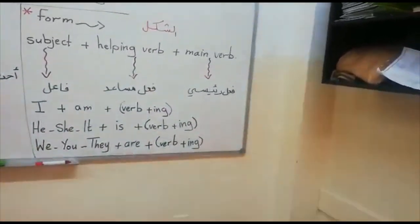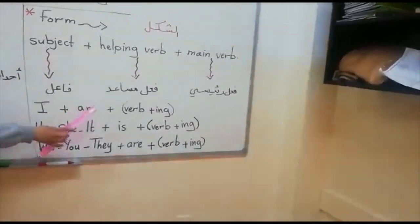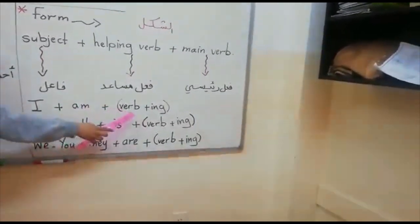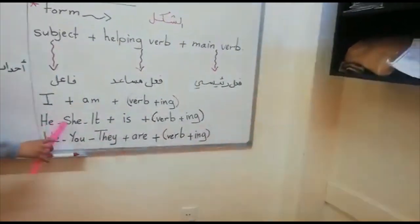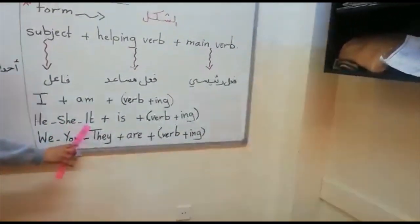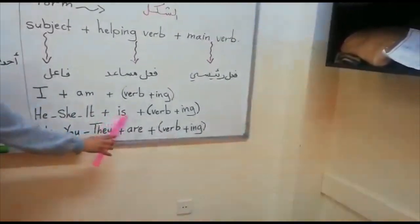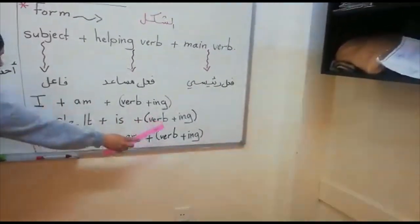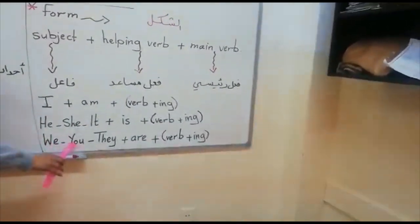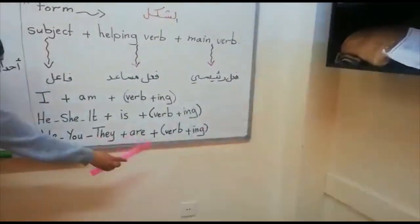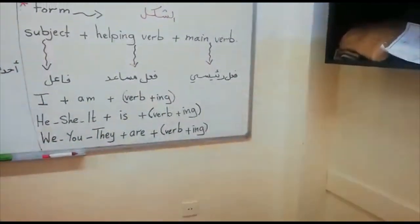For pronouns: I takes 'am' plus verb plus -ing. He, she, and it take 'is' plus verb plus -ing. We, you, and they take 'are' plus verb plus -ing.